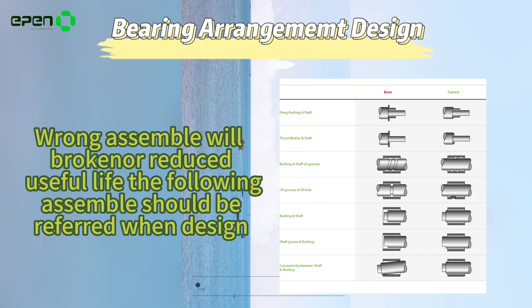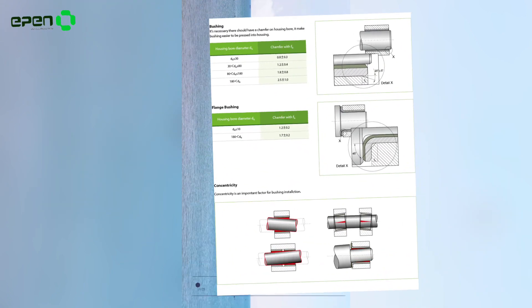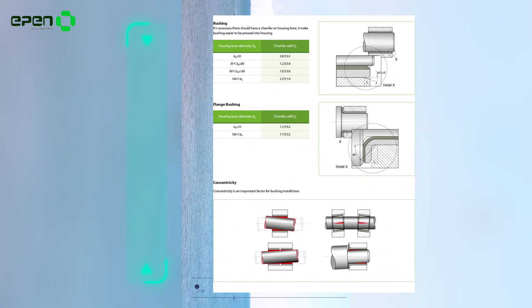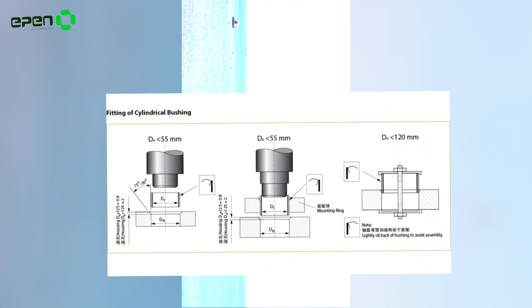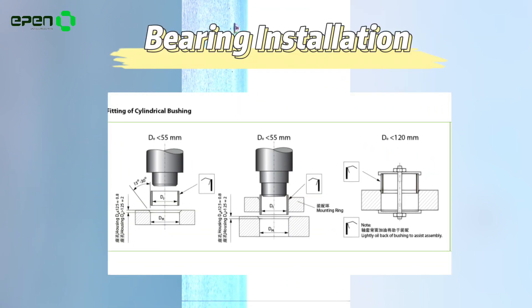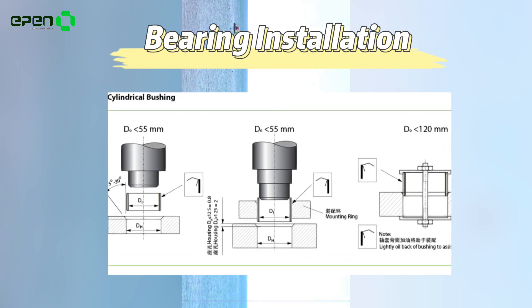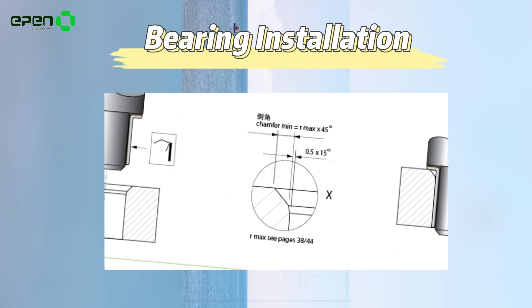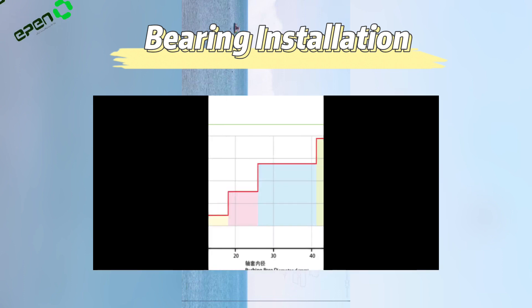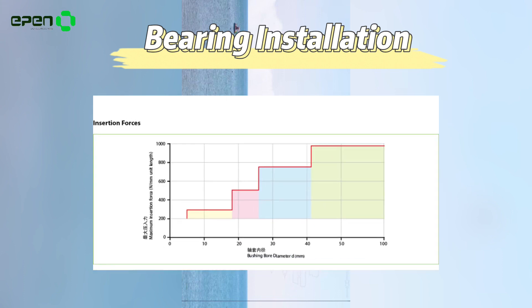Operation load is an important factor for bushing service life. Steady load is beneficial for it. Generally, the specific load is determined by the type of loading and should not exceed the theoretical value. The specific load is obtained by dividing the operation load by the projected area of the bushing. The housing should have hollow dents for installing thrust washers and sliding plates.